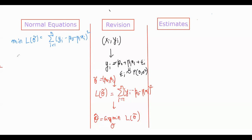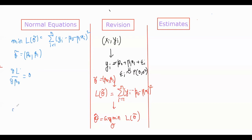So how do we minimize this? Since theta consists of beta0 and beta1, we set the partial derivatives to zero: dL/d(beta0) = 0 and dL/d(beta1) = 0.